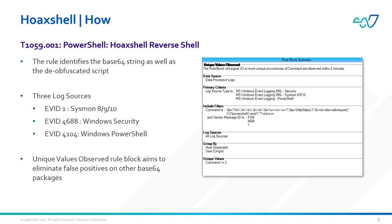The rule itself is a simple unique values observed rule block that allows us to identify when a single user or host has seen multiple instances of the PowerShell script within a two-minute time frame. Windows will attempt to de-obfuscate the PowerShell script, and by looking for both scripts we're eliminating instances where other base64 obfuscated strings may be picked up by the rule.